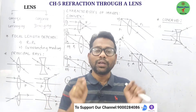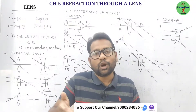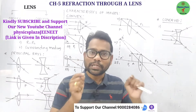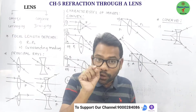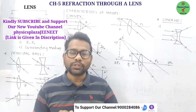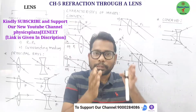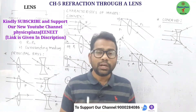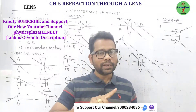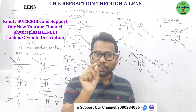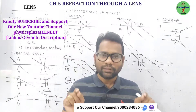The line joining the centers of curvature of the lens is called the principal axis. The optical center is the point on the principal axis such that any light ray directed towards it passes through undeviated. The principal focus is the point on the principal axis where, after refraction, light rays either meet or appear to meet. A lens generally has two foci, one on each side.